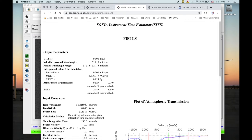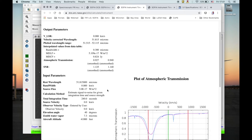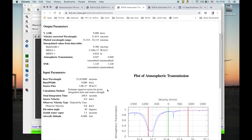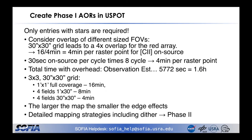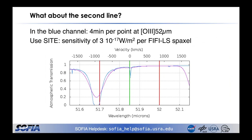Calculating it gives us a signal-to-noise of about 1.1. Down here you see the atmospheric transmission. In the blue channel with 4 minutes per point, CITE estimates that we get basically a 1-sigma noise level of 3 times 10 to the minus 17 Watt per square meter per FIFI-LS voxel. Note that there is a small absorption feature where we expect the line, which is small enough to be ignored.